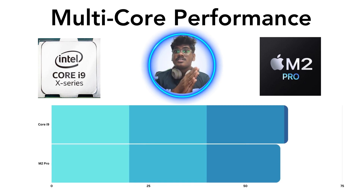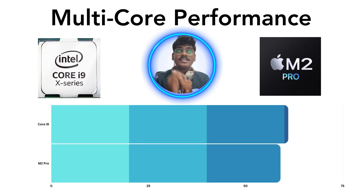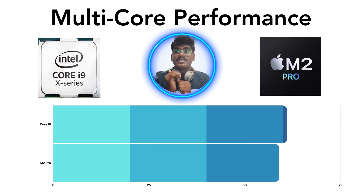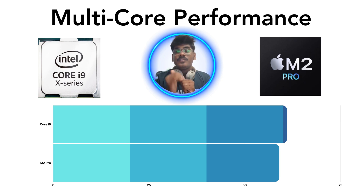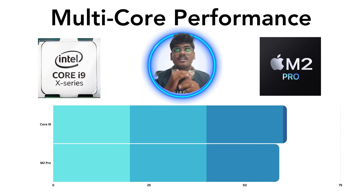In the multi-core performance level, Intel i9 takes 61 out of 100, but M2 Pro takes 59 out of 100. So in multi-core performance, the Intel i9 wins. Let's now dive into power efficiency.